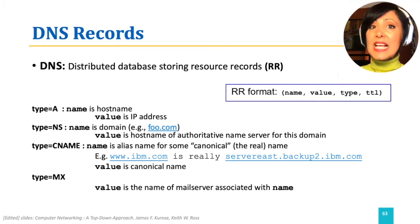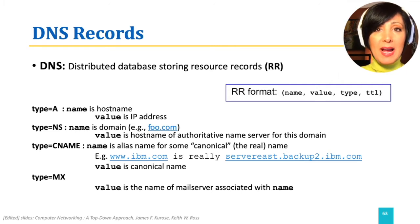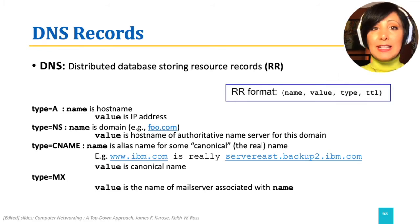DNS has a very simple record format with four main fields: name, value, type, and time to live.